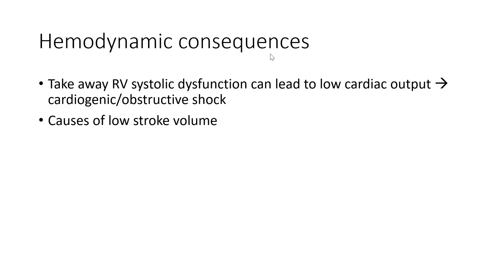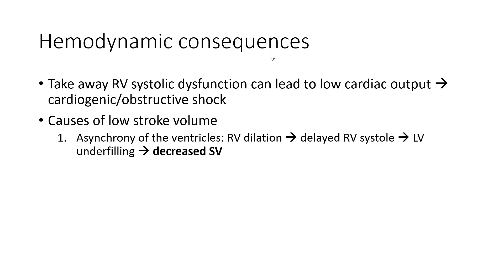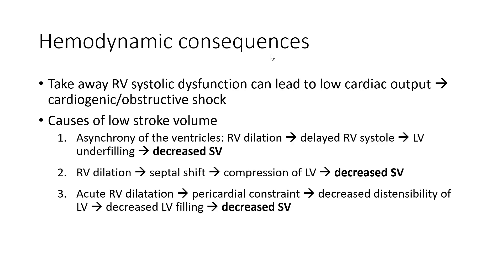The key hemodynamic takeaway is that RV systolic dysfunction can lead to low cardiac output and either a cardiogenic or obstructive shock-like state. The mechanisms of low stroke volume include: first, asynchrony of the ventricles — RV dilation causes delayed RV systole, so as the LV is filling, the RV may still be in systole, decreasing stroke volume. Second, septal shift from RV dilation can compress the LV and decrease stroke volume. Third, in acute RV dilation, the RV takes more of the pericardium, decreasing LV distensibility and LV filling, further reducing stroke volume.